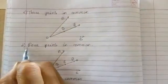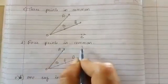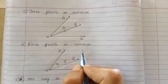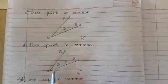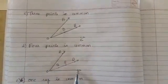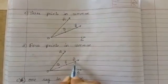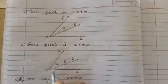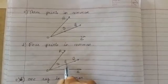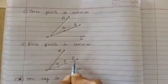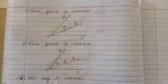Part d is four points in common. We have to draw two angles in which four points are in common. So the two angles are angle AOB and angle COB. The points in common are point O, point D, point E, and point B. Thus, these are four points in common.